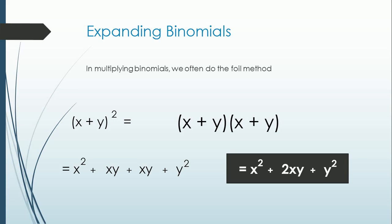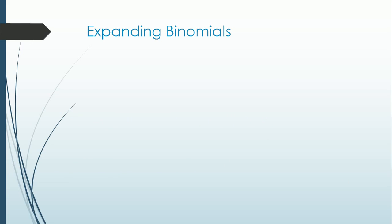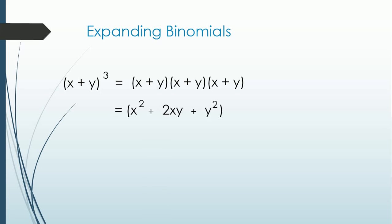But how about expanding binomials raised to 3? For example, quantity x plus y raised to 3. This becomes x plus y times x plus y times x plus y. To solve for this, do the FOIL method on the first two polynomials, and it will become x squared plus 2xy plus y squared. Then after that, we will multiply it by the other binomial, quantity x plus y.